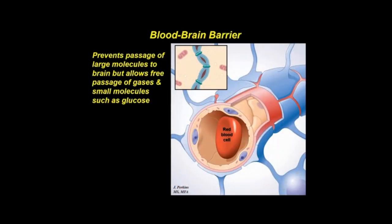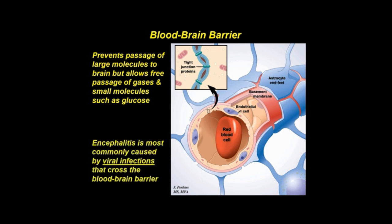The blood-brain barrier restricts indiscriminate access of certain substances in the bloodstream to the brain. It consists of capillary endothelial cells sealed by tight junctions and an overlying basement membrane. Endothelial cells have pinocytotic vesicles, which participate in unidirectional transport of protein and fluids from blood to brain. Capillaries are covered by astrocyte end feet, which cover 85% of the surface of the basement membrane. Encephalitis is most commonly caused by viral infections that cross the blood-brain barrier.